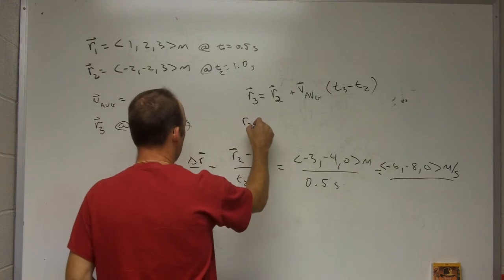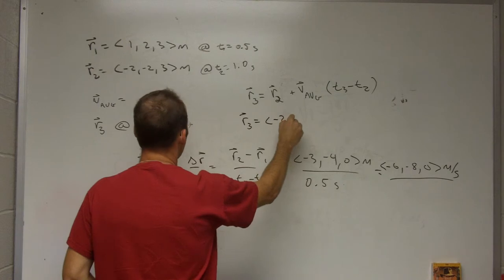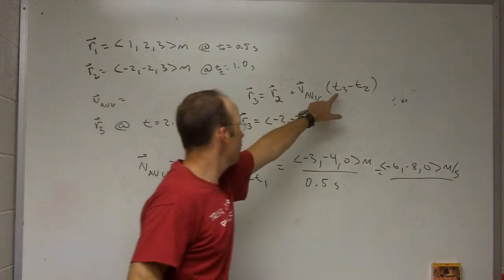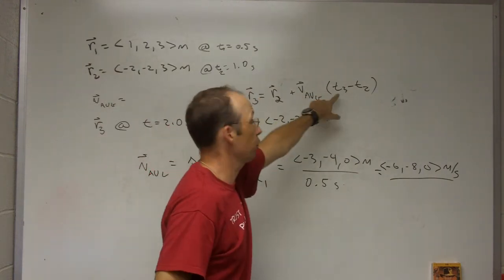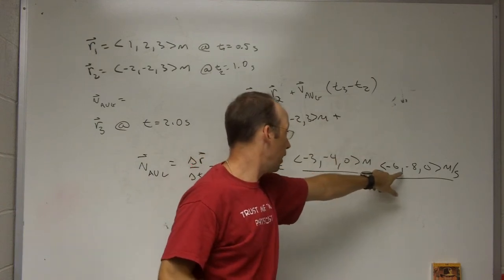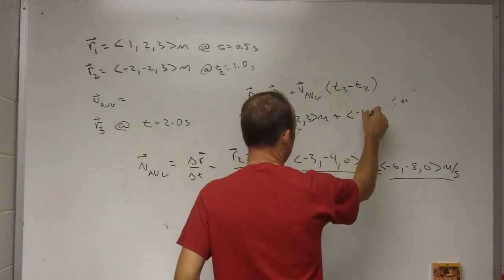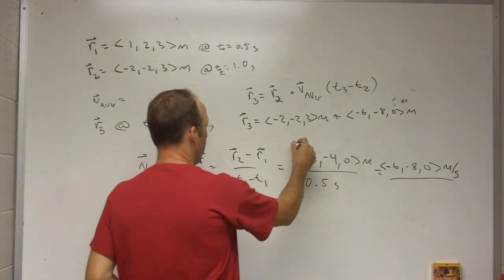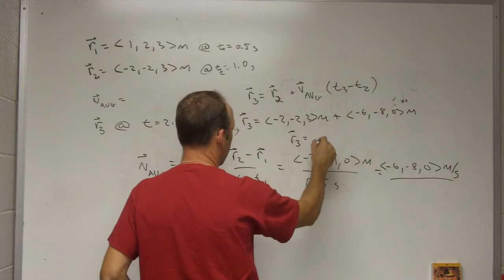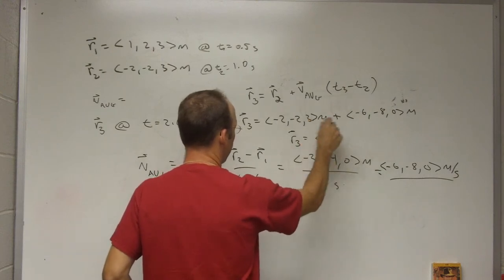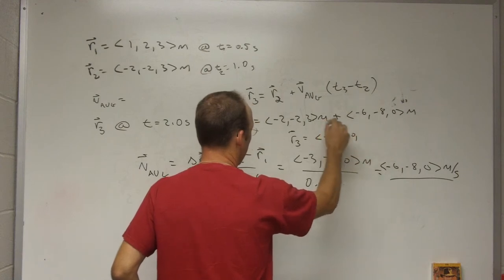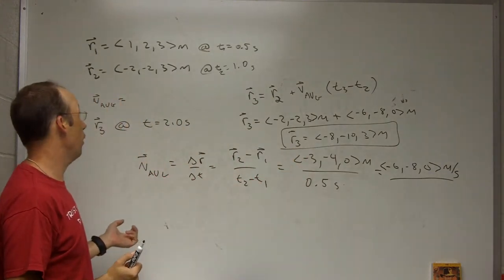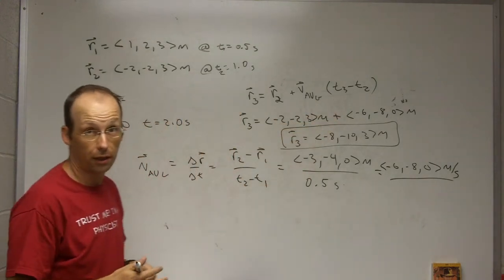Okay, so let me write this out. R3 is going to be R2, which is going to be negative 2, negative 2, 3 meters, plus this T3 is 2 minus 1. This is just 1 second. So when I multiply this by 1 second, I just get negative 6, negative 8, zero meters. So now I just have to add these two vectors, and I get R3. It's going to be negative 2 plus negative 6, negative 8, negative 2 plus negative 8, negative 10, and 3 plus 0, 3 meters. So you should go ahead and try it for yourself. Try doing the same thing but putting R1 and T1 there. You should get the same value.